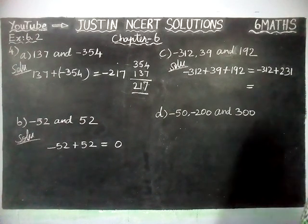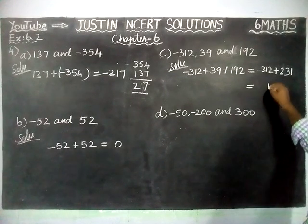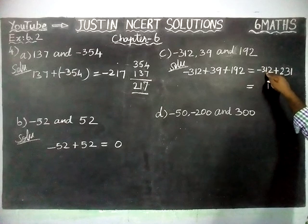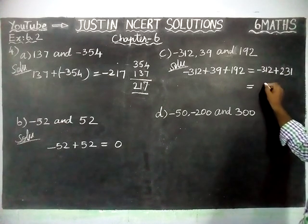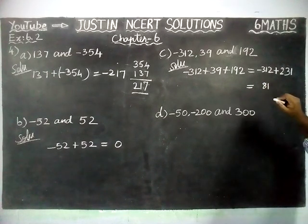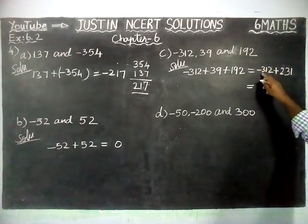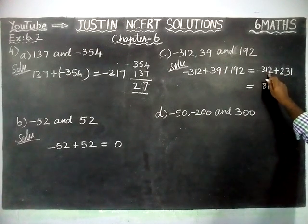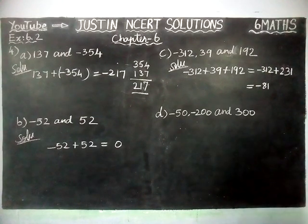Now 312 plus 231 — signs are different, we have to find the difference. 2 minus 1 is equal to 1. Here we have only 1, we cannot subtract, so we are borrowing from here. Now 11 minus 3 is equal to 8. Next here we have only 2, 2 minus 2 is equal to 0. Forget about the signs — the number 312 is the greatest number and in front of 312 minus sign is there. So minus 81 is the correct answer.